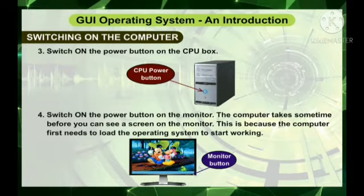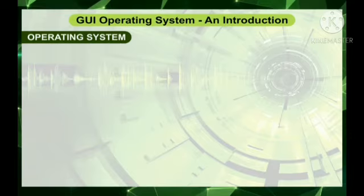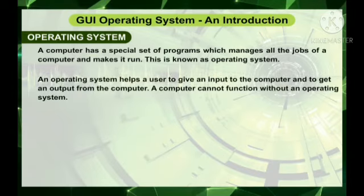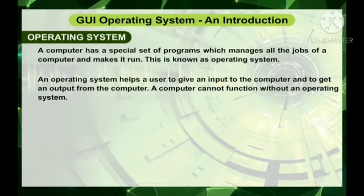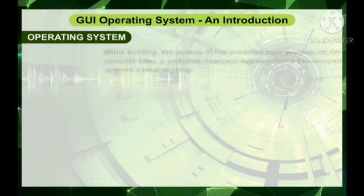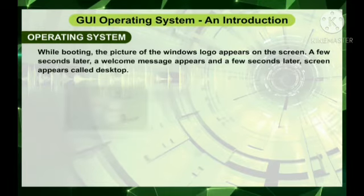This is because the computer first needs to load the operating system to start working. A computer has a special set of programs which manages all the jobs of a computer and makes it run. This is known as the operating system. An operating system helps a user to give an input to the computer and to get an output from the computer. A computer cannot function without an operating system. When you switch on a computer, the Windows operating system gets loaded into the computer memory automatically. This process is called booting.